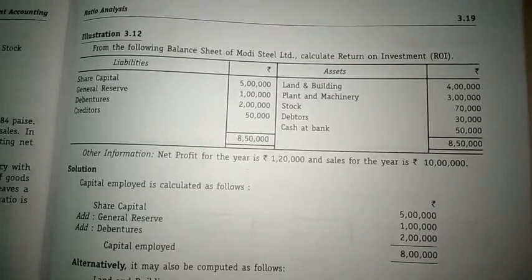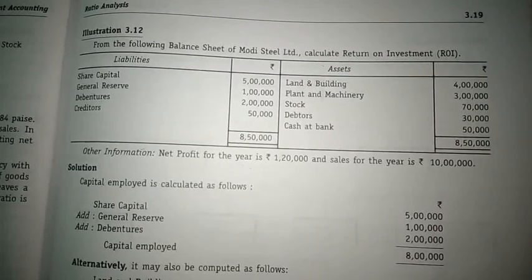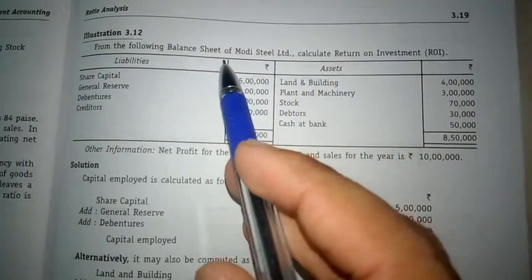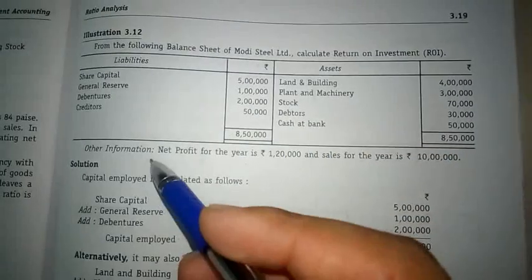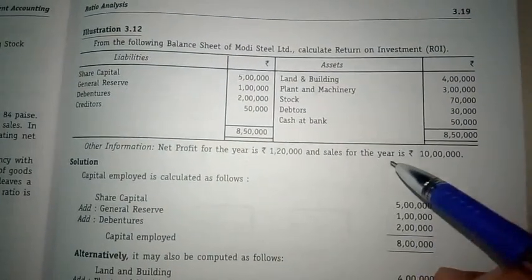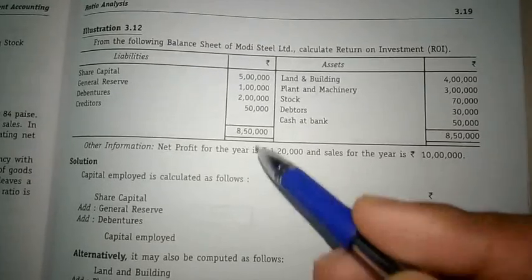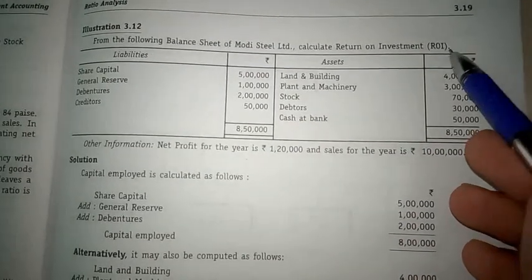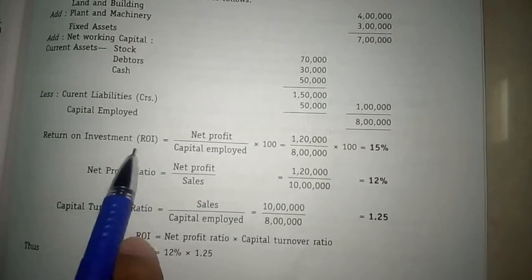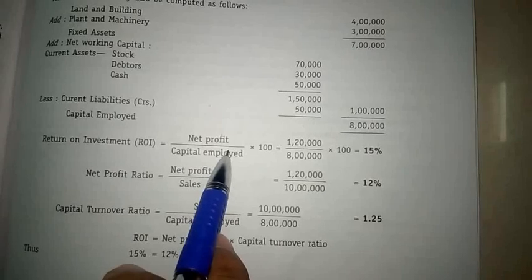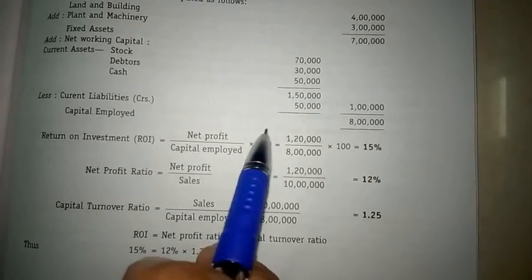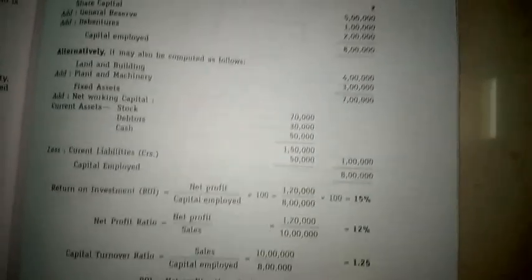Hello students. In this video, let us understand how to calculate Return on Investment. They have given the balance sheet of Modi Steel Limited, with net profit for the year of 1 lakh 20,000 and sales for the year of 10 lakh rupees. Using this information, we are supposed to calculate Return on Investment.